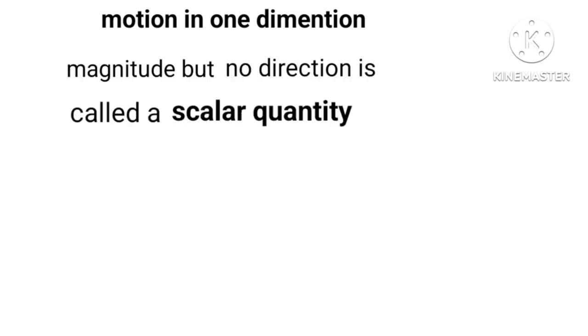A physical quantity that have magnitude but no direction is called a scalar quantity. It is represented as absolute A-B for example. Distance, speed, time etc. Its SI unit is meter.